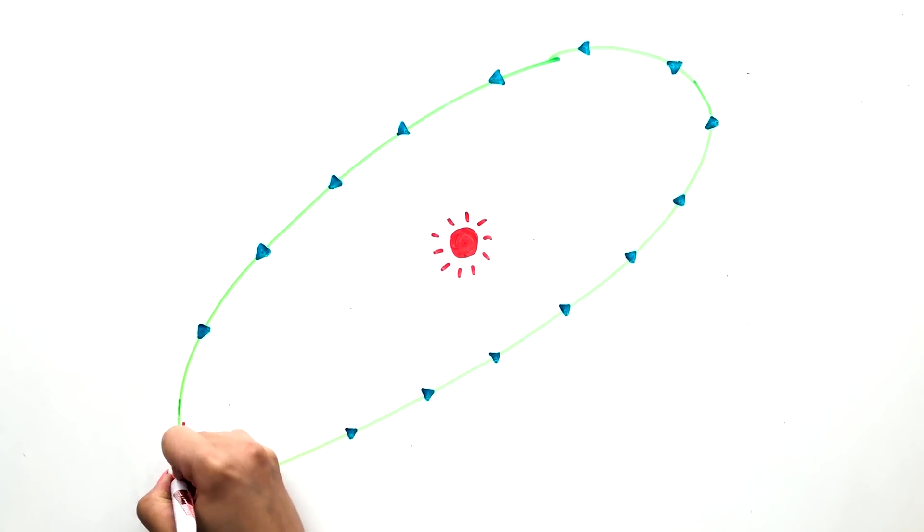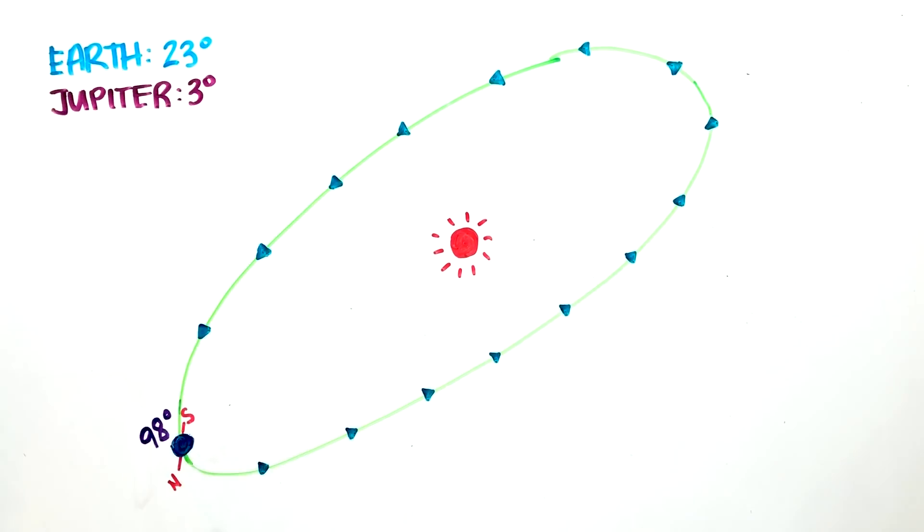As it orbits around the Sun, it lies on its side at 98 degrees along its orbital path, almost as if it's rolling instead of spinning. No other planet in our solar system is tilted for more than 30 degrees off its axis. Earth is tilted for 23 degrees, Jupiter at 3 degrees, and Saturn at 29 degrees.